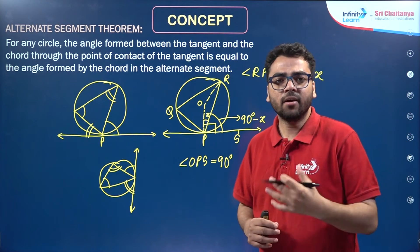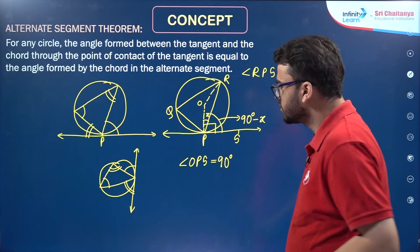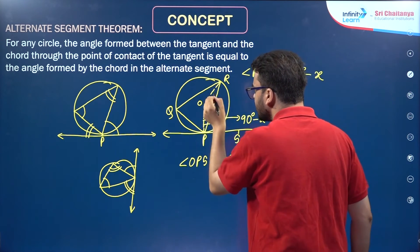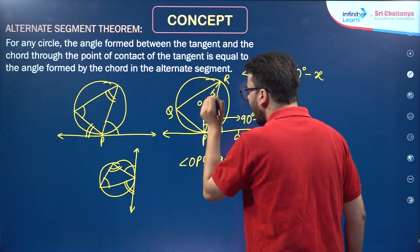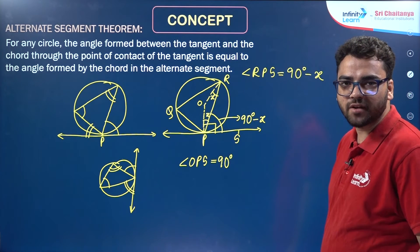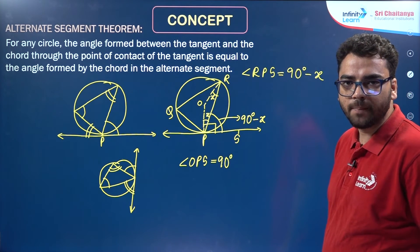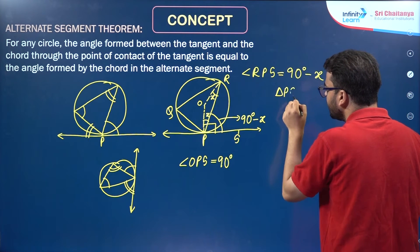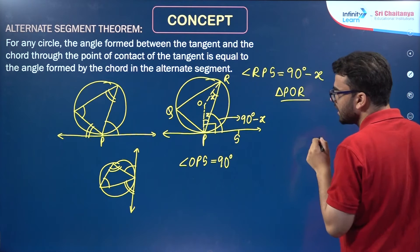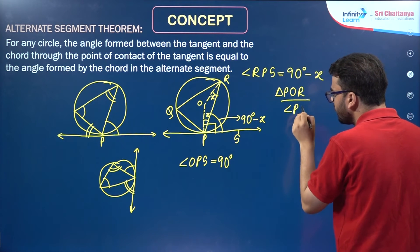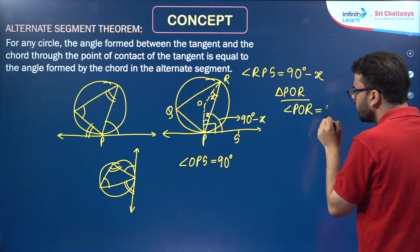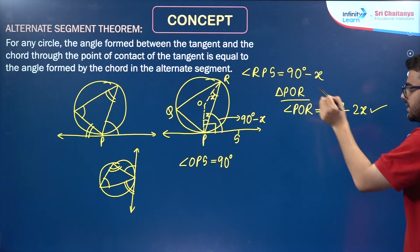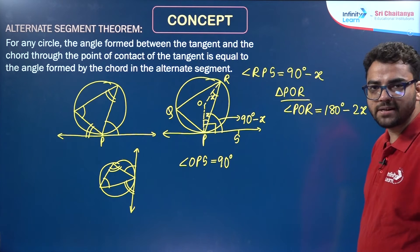The radii of the same circle are equal, so OP and OR will be equal. By the property that angles opposite to equal sides of a triangle are equal, this angle will also be X. So in triangle POR, using the angle sum property, angle POR is equal to 180 minus 2X.